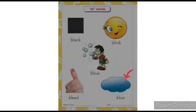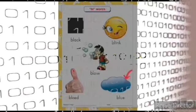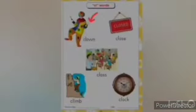BL, CL words and the sound of CL is CL. CL, CL, L-O-W-N, CLOWN. CL, O-S-E, CLOSE. CL, A-Double S, CLASS. CL, CL, O, C, L-O-C-K, CLOCK.